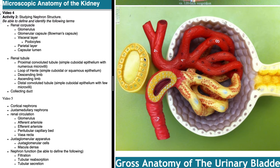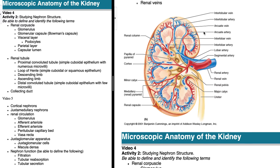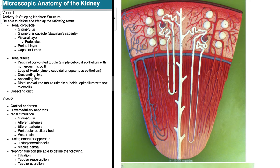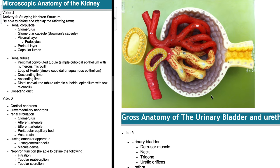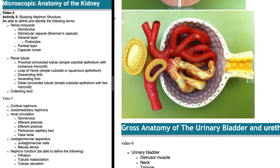We're zooming in on the smaller structures within the kidney. There are three levels to think about: the entire gross anatomy perspective, where you cut the kidney in a frontal section; a single renal pyramid with the cortex above it; and then the third level, zooming all the way down to the capillary bed level. This video covers microscopic anatomy because it's impossible to see these details without a microscope.